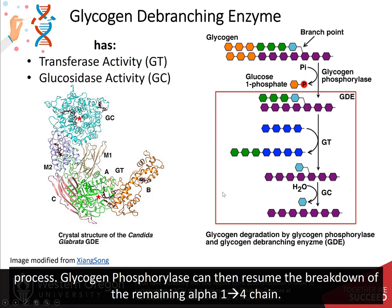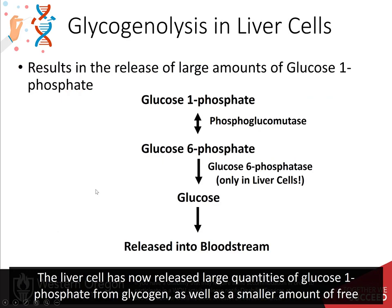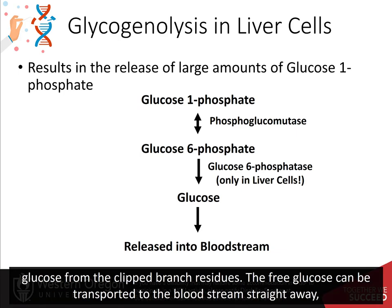Glycogen phosphorylase can then resume the breakdown of the remaining alpha-1,4 chain. The liver cell has now released large quantities of glucose-1-phosphate from glycogen, as well as a smaller amount of free glucose from the clipped branch residues. The free glucose can be transported to the bloodstream straight away.